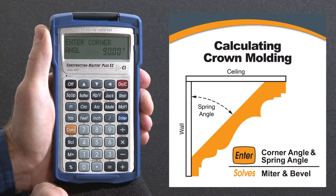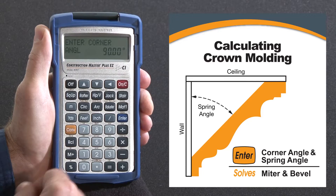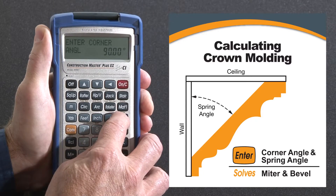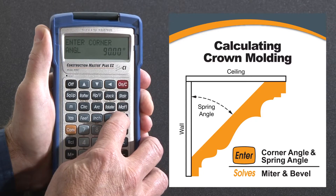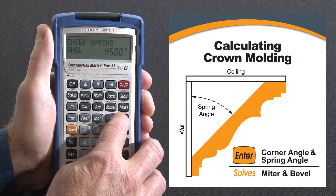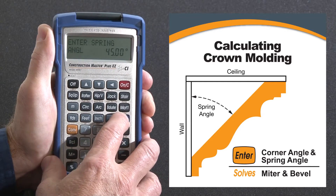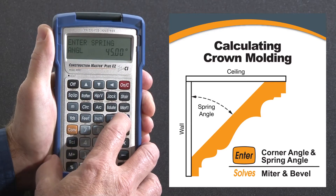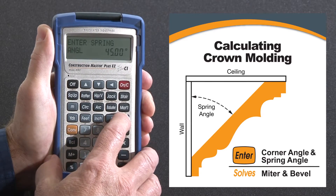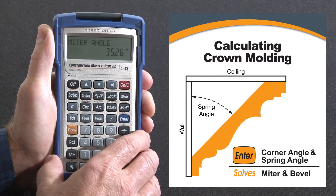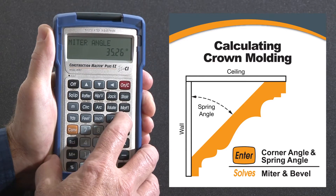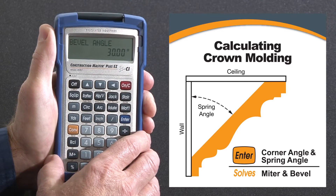I'll hit Enter. The default value in there is a 90-degree corner, so we can go ahead and proceed with that just to show for illustrations. The default angle is a 45-degree angle — that's the spring angle, the angle that the crown comes off the wall. So your miter angle would be 35.26 degrees, and your bevel angle would be 30 degrees.